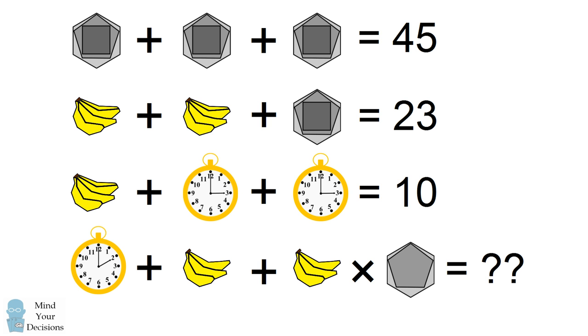So before you start computing the final answer, you should look very closely at the last line. The shapes are different from the shapes in the previous lines. For example, the clock in the final line shows two o'clock, but in the previous line it shows three o'clock.